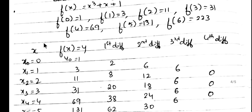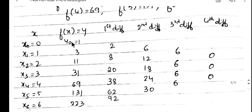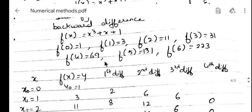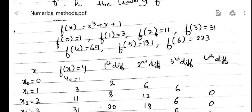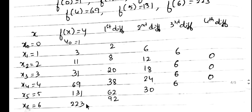Construct the table with x values 0, 1, 2, 3, 4, 5, 6 labeled as x0 through x6, and corresponding y values y0 = 1, y1 = 3, y2 = 11, y3 = 31, y4 = 69, y5 = 131, y6 = 223.